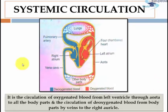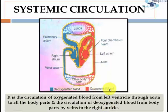Now I will discuss about systemic circulation. It is the circulation of oxygenated blood from the left ventricle through the aorta to all the body parts, and the circulation of deoxygenated blood from the body parts by veins to the right auricle. So this was about double circulation — we have discussed pulmonary circulation and systemic circulation, and we are now aware of what double circulation means.